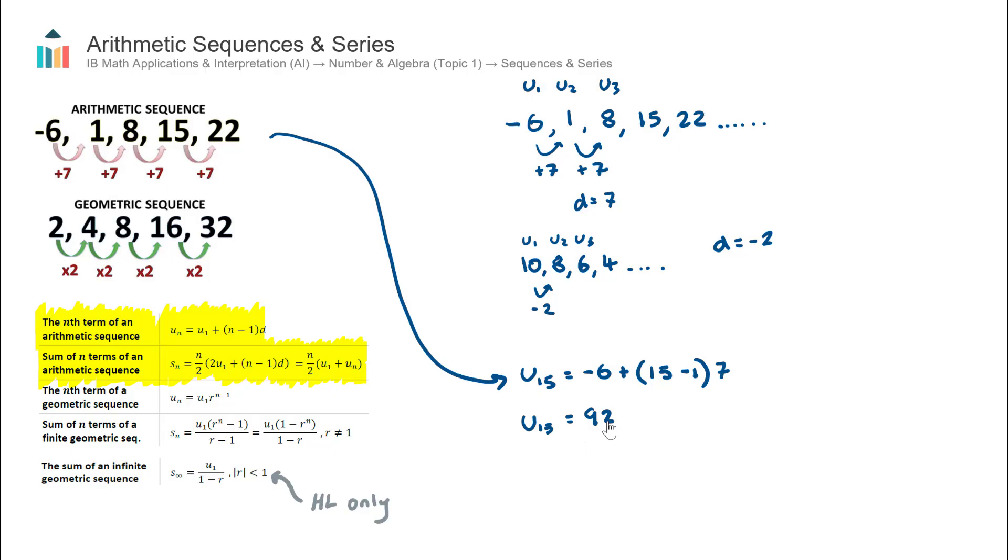Now the second formula is to not find the term number, but to actually find the sum of a certain number of terms. And that's what a series is called. A series is summing up the terms in a sequence.